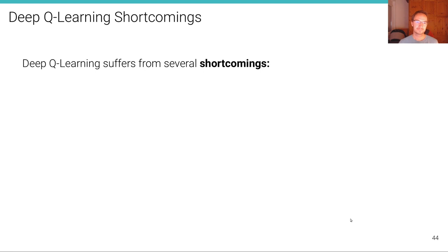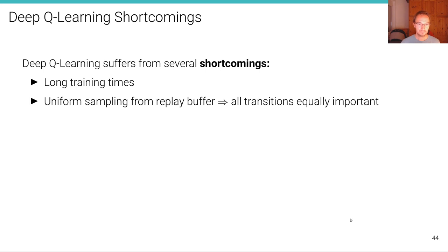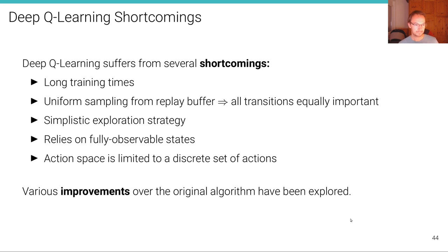Deep Q-learning suffers from several shortcomings. First, it suffers from long training times — difficult to improve because of sparse rewards combined with the need for many gradient updates. Second, it uses uniform sampling from the replay buffer, treating all transitions as equally important when they might not be. Third, it uses a very simplistic exploration strategy. Fourth, it relies on fully observable states. Fifth, the action space is limited to a discrete set of actions.